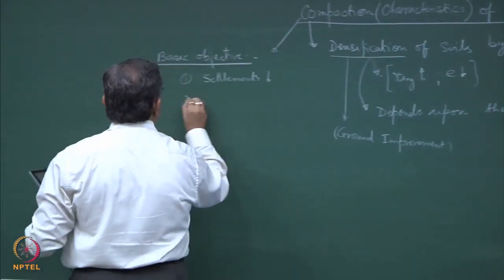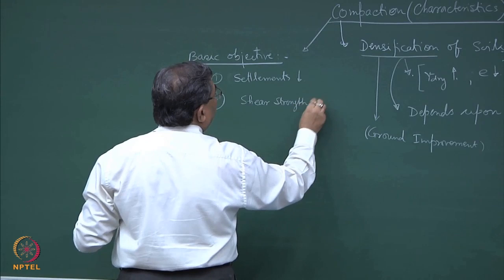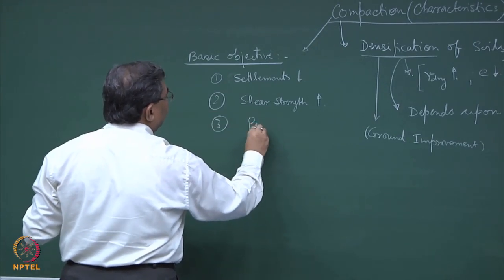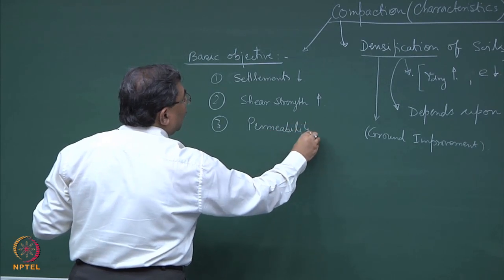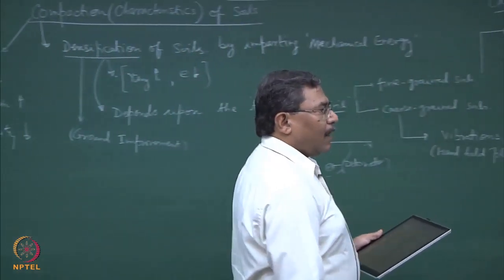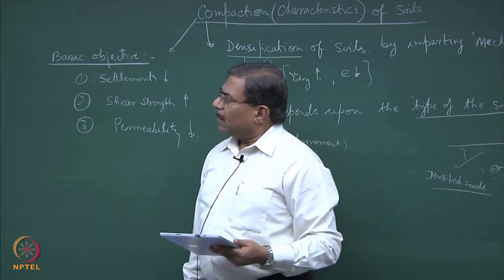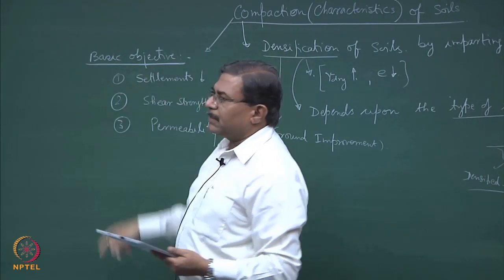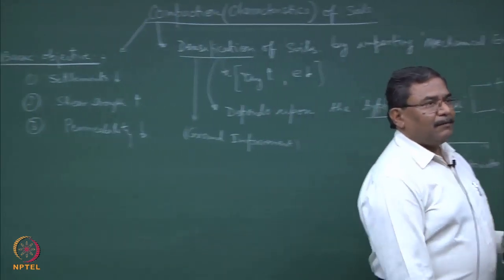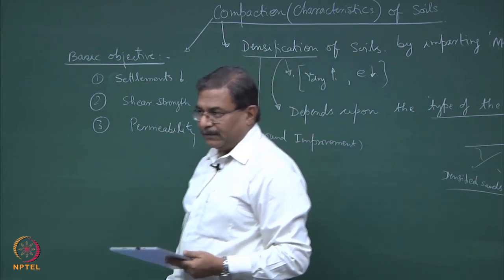Another objective is to enhance the shear strength of the soil, and the third objective is to reduce the permeability. When somebody approaches you to give a solution: if I want to reduce settlements, I have to compact the soils. If I want to increase the shear strength or bearing capacity, I might have to compact them. If I want to decrease the permeability, I would like to compact the soil. These are the objectives.